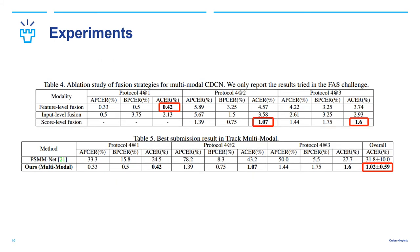This is the result of our multi-modal CDCN. From Table 4, we can see that feature-level fusion and score-level fusion perform better than input-level fusion. From Table 5, we achieve state-of-the-art performance with our proposed multi-modal CDCN.